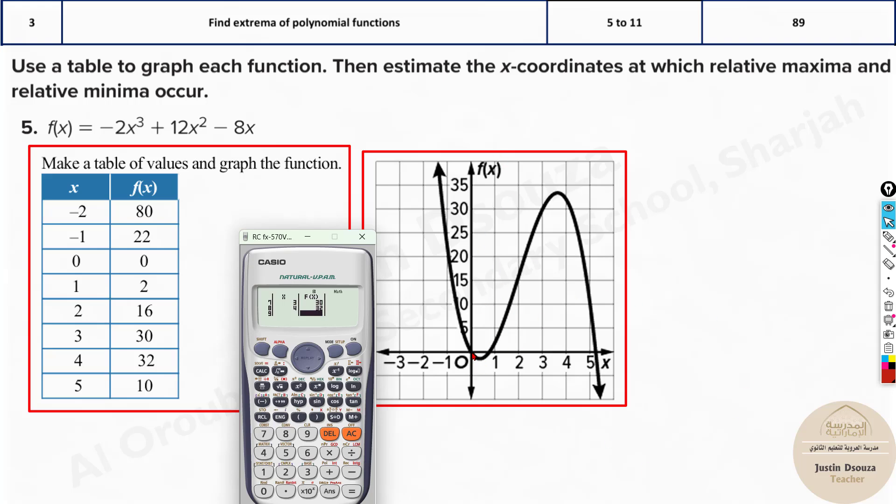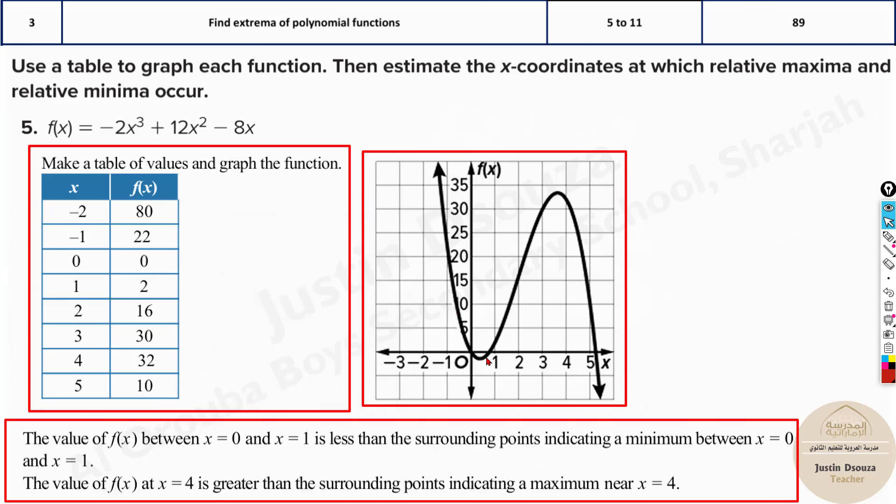But now what about the maximum and minimum points? Here you can see where it dips down is the minimum point. The minimum is at 0.5 or over here it's written between 0 to 1. And where is the maximum? It's between 3 to 4. So that is how we can deduce it. Where is the maximum and minimum?